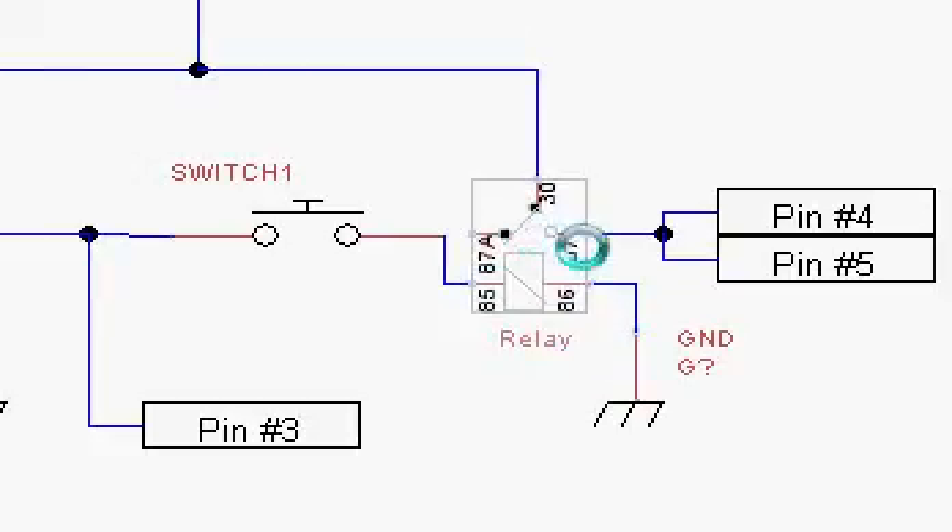Pin 87 is connected to pins 4 and 5 on the ignition harness, so that whenever you push the button it'll charge the relay and give power to pin 87 on relay 2, which will in turn power pins 4 and 5 on your ignition harness.